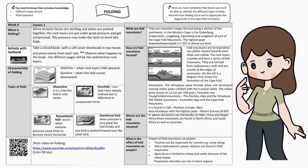Characteristics of folding: Anticline is when rock layers fold upwards. Syncline is when the fold curves downwards. Types of folds include monocline, a step-like fold in rock strata, and overfold, which occurs when one limb is more steeply inclined due to difference in compression force.